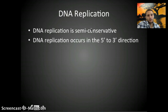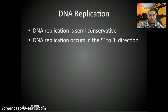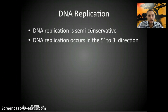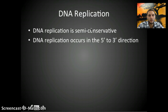DNA replication occurs in a five prime to three prime direction. This is important and will come into play more when we look at the steps of how DNA replication occurs, but it's important to remember that DNA replication occurs in this specific direction — five prime to three prime.